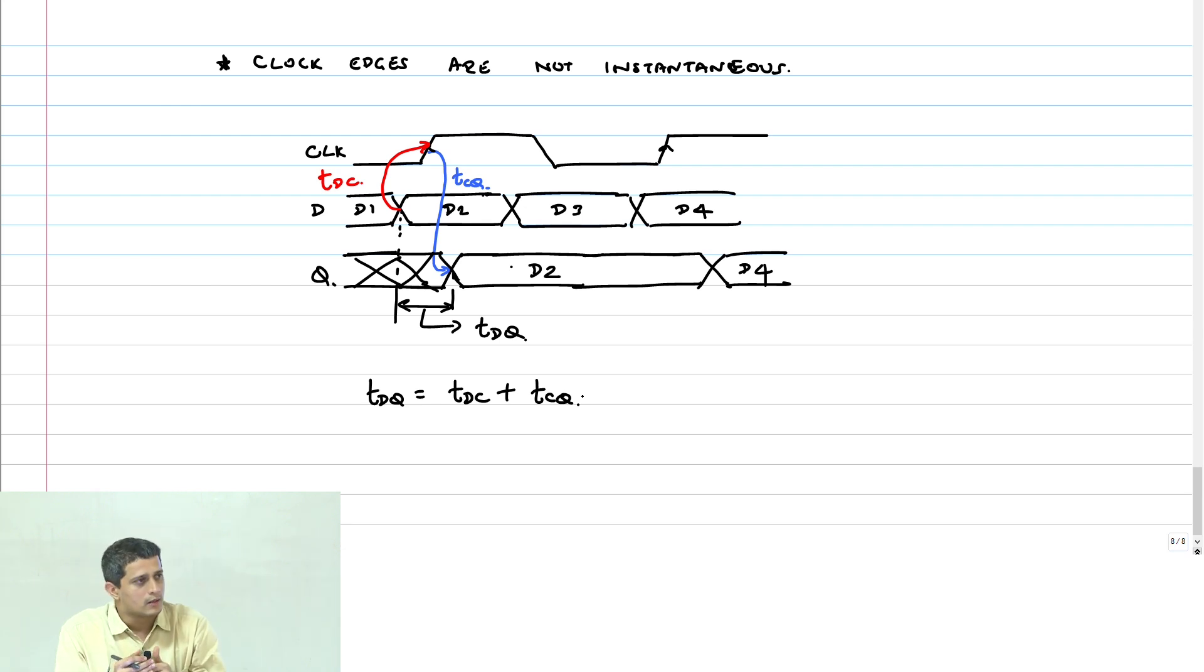Now my point is I want to make t_dc smaller and smaller. That is, I am going to bring the data change closer and closer to the sampling edge and see when the flop fails. The point is, as I bring the data edge closer and closer to the clock, that feedback loop will start entering metastability region.